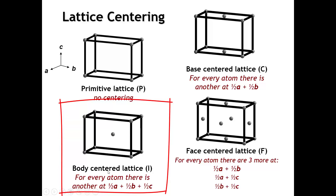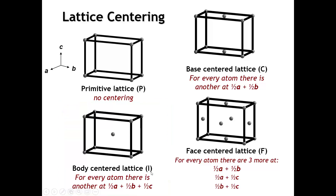The symbol for a body-centered lattice is I. What this means is that everywhere in the crystal where we have an atom, there has to be an equivalent atom displaced by one-half of the A lattice vector, one-half of the B lattice vector, and one-half of the C lattice vector.